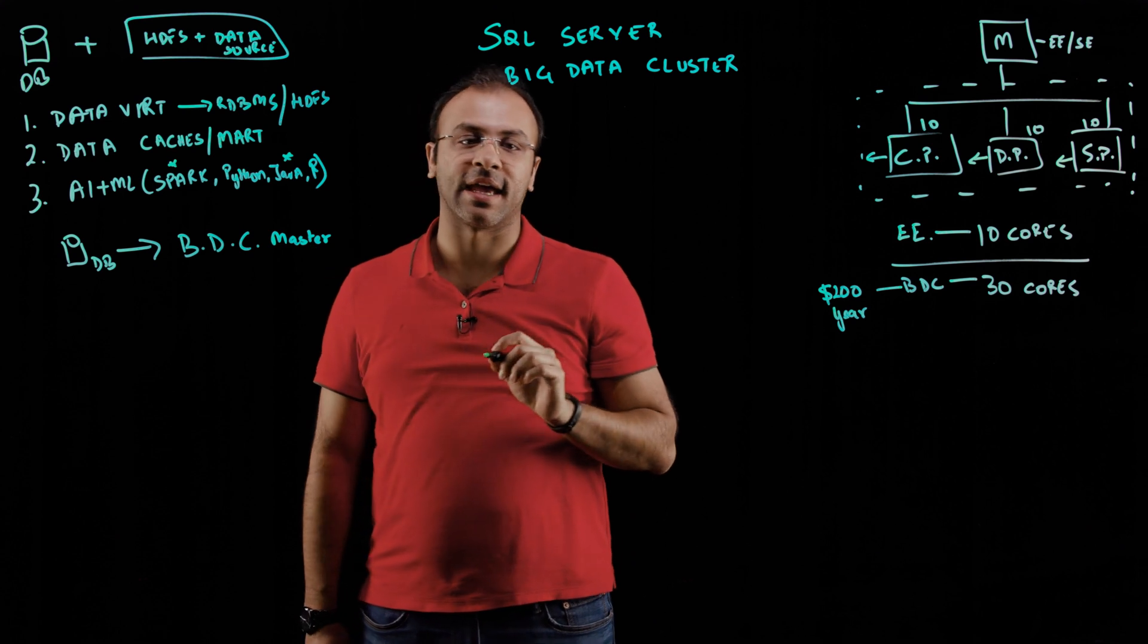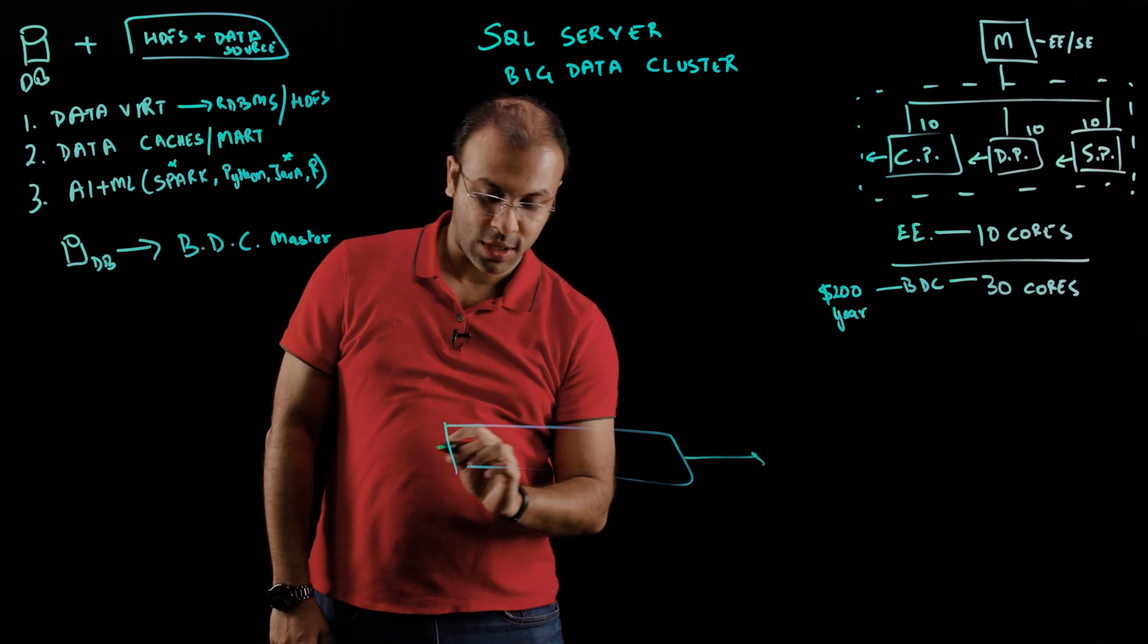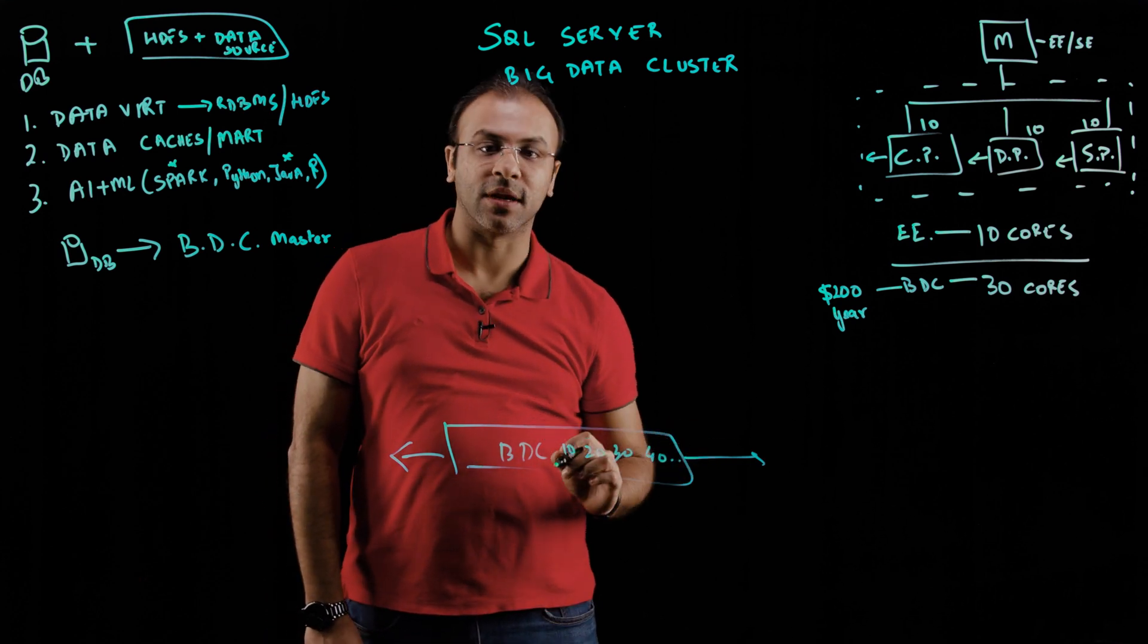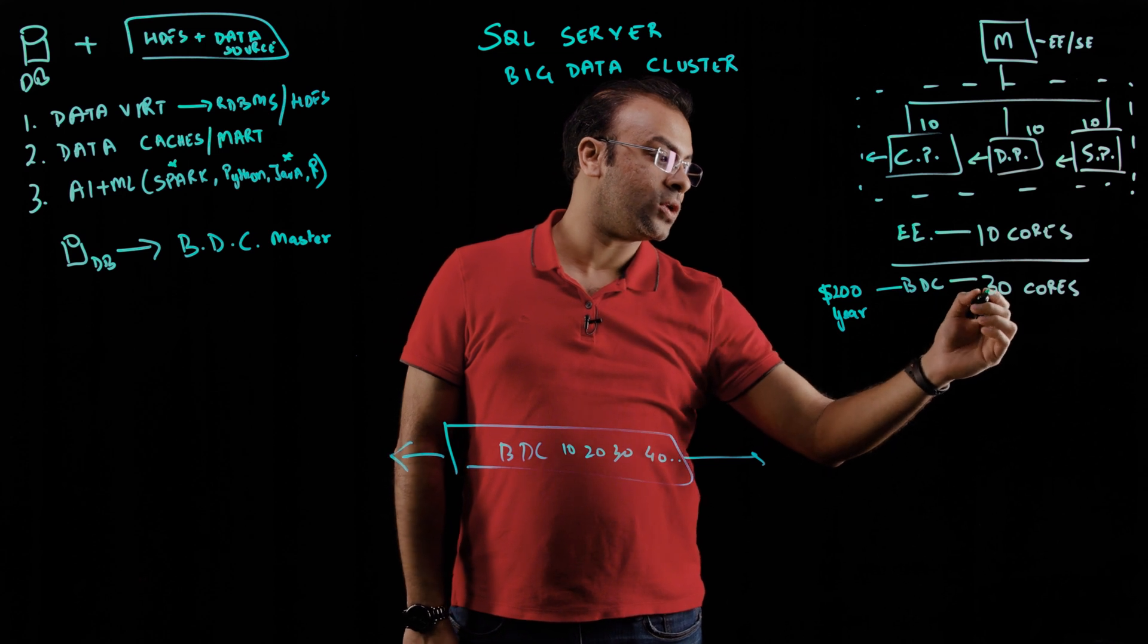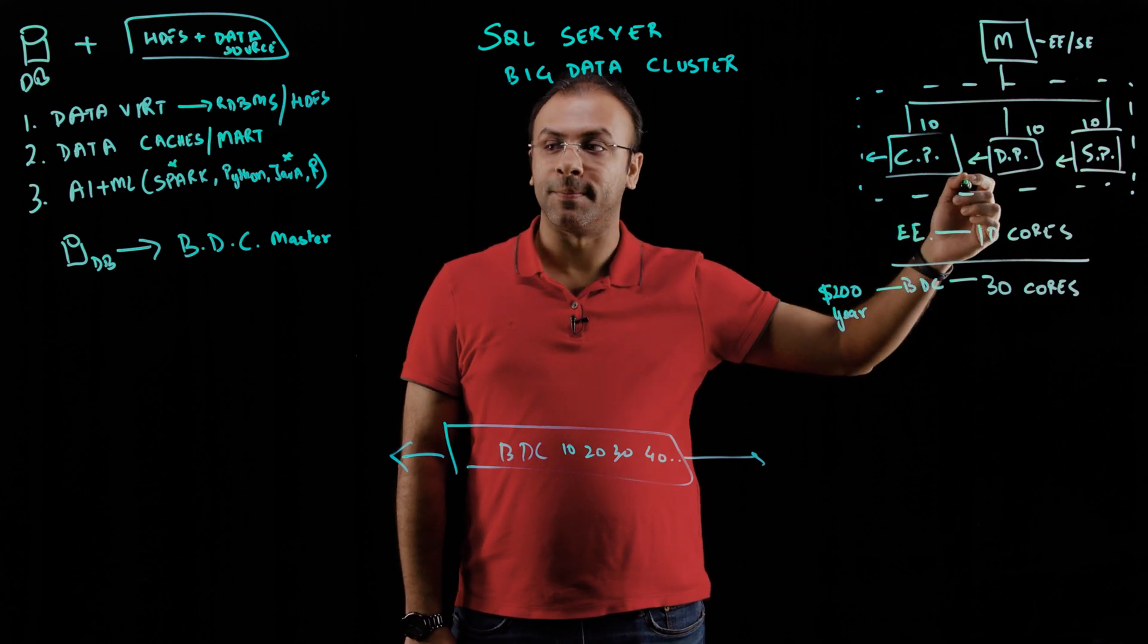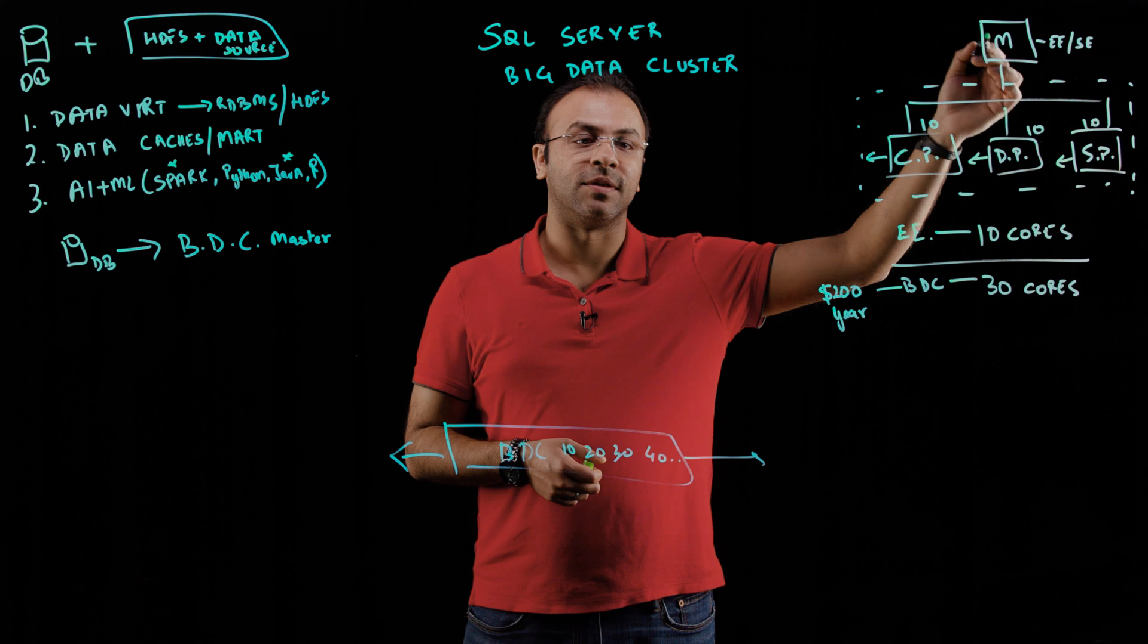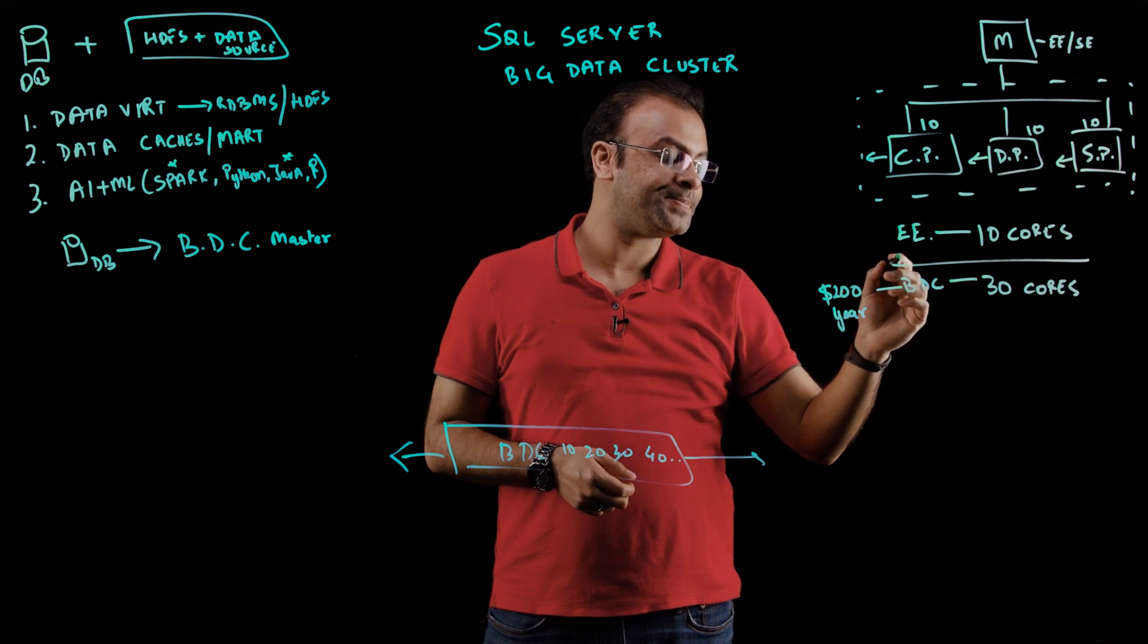In this scenario, you can for the first time expand horizontally. Your big data cluster nodes could go from 10 to 20 to 30 to 40 and keep increasing as you need and as your enterprise needs grow. Your 30 cores could become 40 without affecting the number of cores required in the master to run them. As long as you have compute capacity to run all these scenarios, you should be able to license only for what's required for the master and the big data cluster cores inside the compute, data, and storage pools.